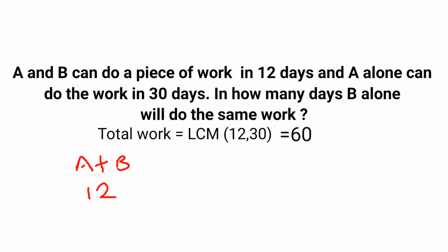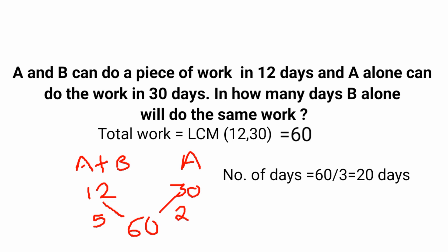A and B together take 12 days and the total work is 60, so the efficiency of A and B together equals 60 divided by 12, which is 5 — meaning A and B together complete 5 units of work per day. A alone takes 30 days, so efficiency of A equals 60 divided by 30, which is 2 — A completes 2 units per day. Therefore, efficiency of B equals 5 minus 2, which is 3.